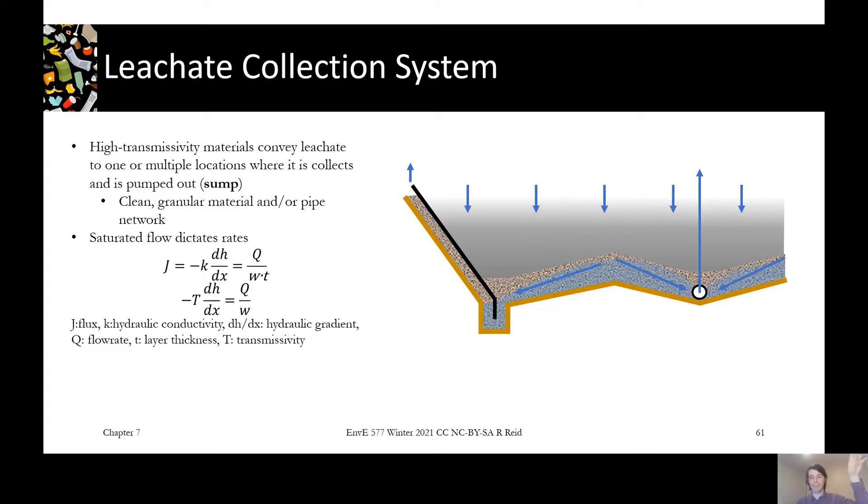In the final cover system you could use a drainage blanket, but this is under so much weight of waste that you really need something that's going to stand up to that. So it's usually gravel wrapped in geotextile to keep it from fouling with solids coming down in from the waste.